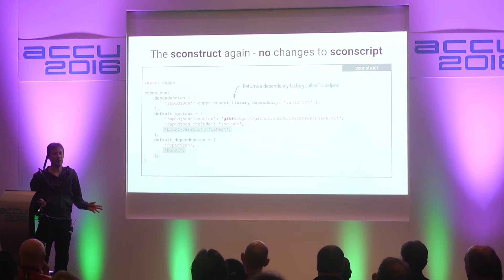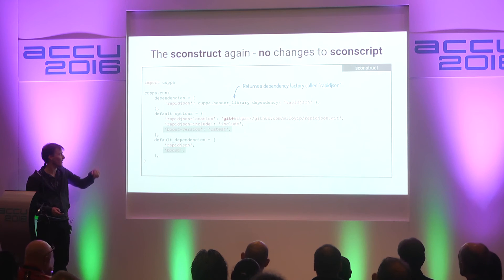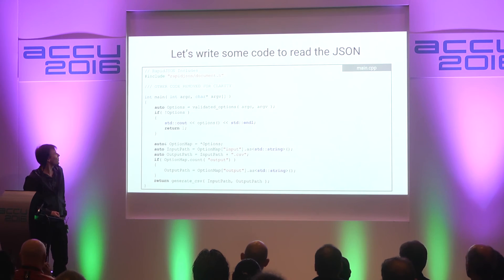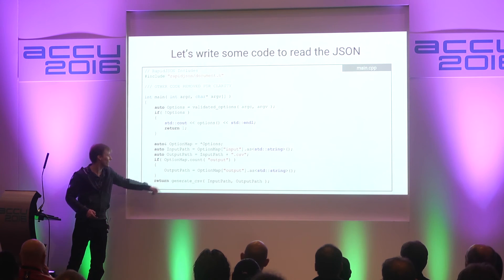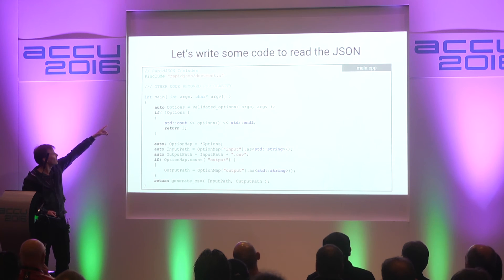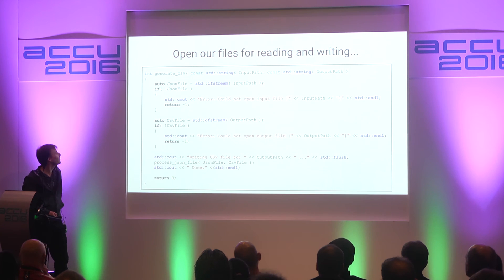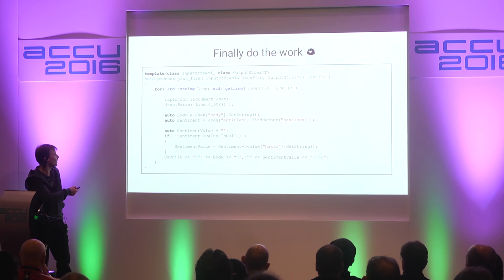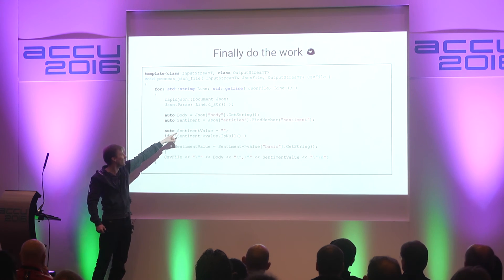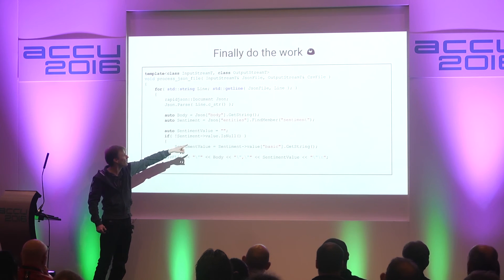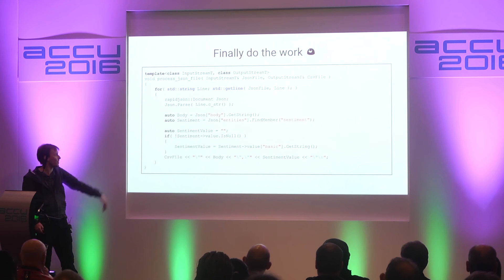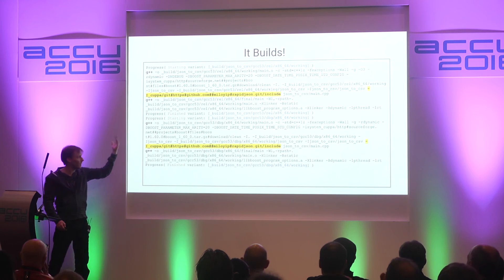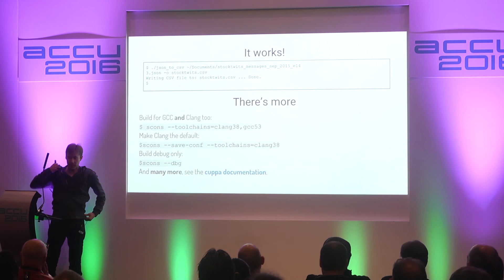I skimmed the documentation on their site and it said header-only, so fine, let's try it and see what works. We'll add in some extra code to generate CSV. The only difference in the source code is we've added 'rapidjson/document.h' at the top. The code itself just needed to get two things: the actual tweet message and the sentiment, which was in a sub-object. That's just how you do it in RapidJSON. When we build this, the include path is automatically added to the command line. And it works - it works very well.